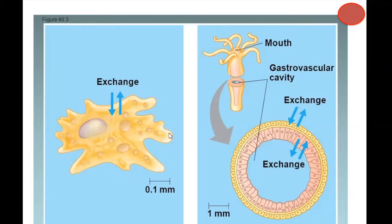If you're an amoeba sitting in a pond, you could do all that because you've got oxygen and nutrients out there. You're exchanging it through your cell membrane — your whole body gets it because you're only one cell. Or if you're a very simple organism where cells are lining the environment, they're able to exchange gas or nutrients with the surrounding environment. Those are very simple sorts of systems.